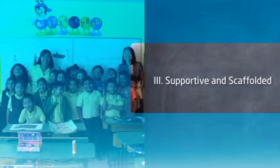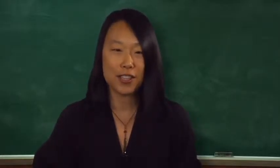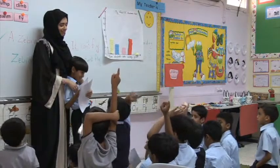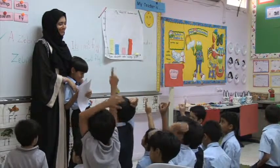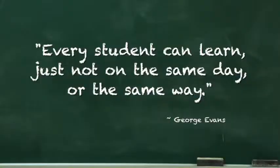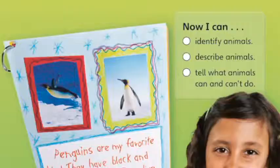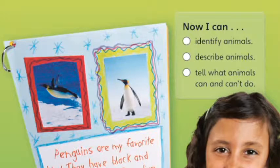Make your classroom supportive and scaffolded. In other words, set your students up for success. First, be supportive emotionally and encourage them. Praise them. Give them all love and attention equally. You should never have favorites. And remember that every student can learn, just not on the same day or the same way. With that in mind, always think in terms of what your students can do, not what they can't do. And make their success your responsibility.